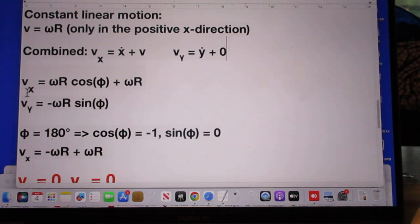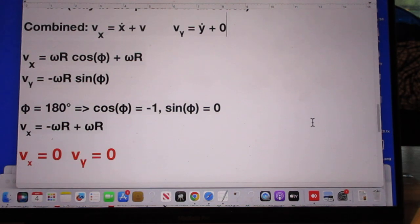So he finds then that Vx is this, Vy is this, you substitute in there that cosine phi is minus one, when phi is 180 degrees, and you find immediately that Vx is zero. And Vy is also zero, because the sine of phi is zero.